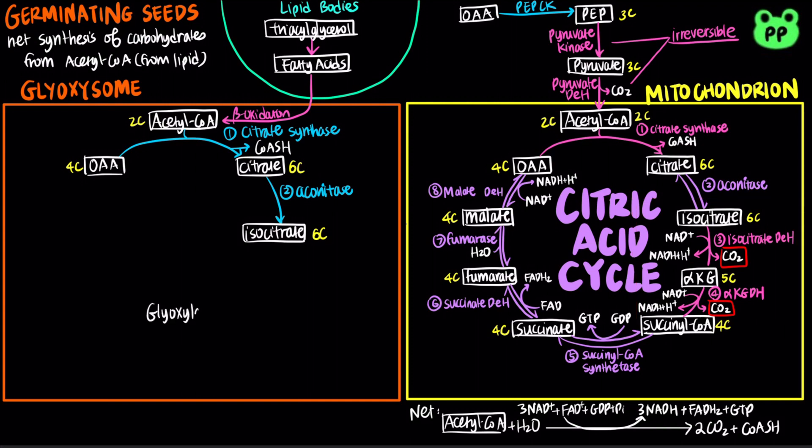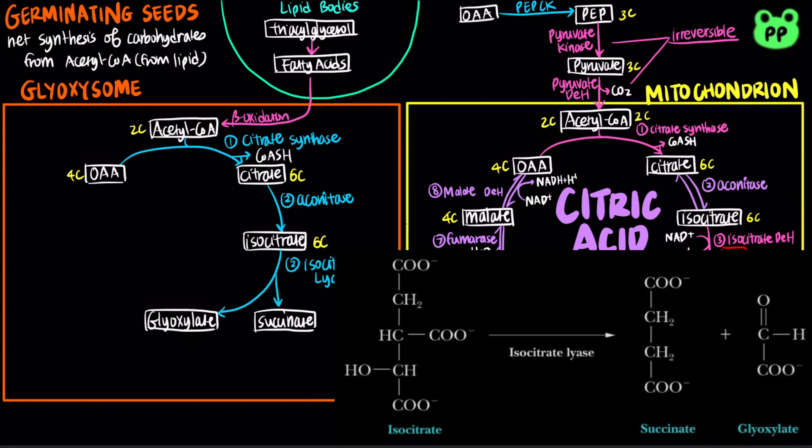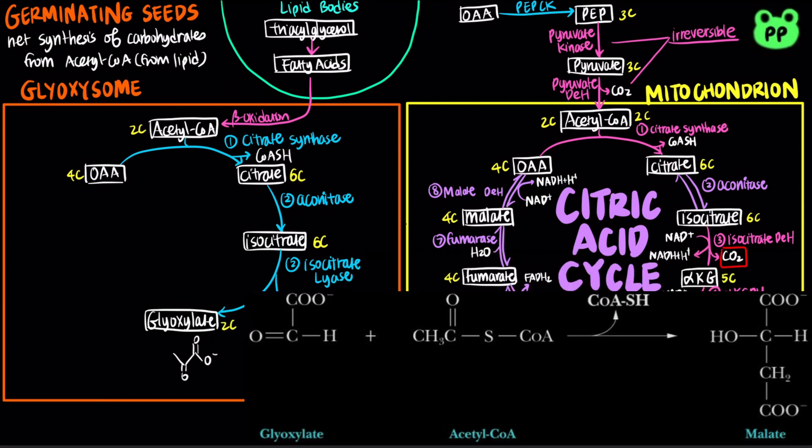The third step of glyoxylate cycle involves cleavage of the six-carbon isocitrate by isocitrate lyase, forming the four-carbon succinate and the two-carbon glyoxylate. The glyoxylate then condenses with a second molecule of acetyl-CoA to produce malate in a reaction catalyzed by malate synthase.